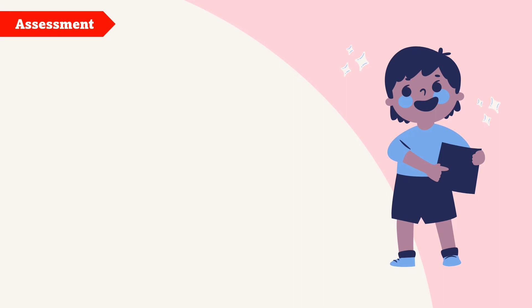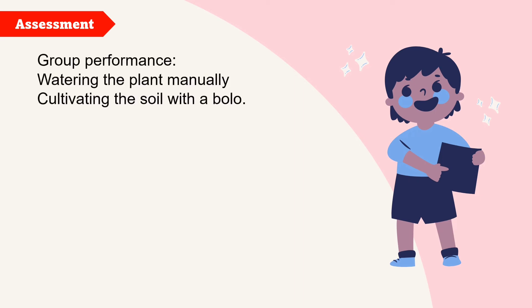At this point, we are going to put your knowledge into action. You are going to have a performance task: water the plants manually and cultivate the soil with a bolo. It depends on your teacher what materials you are going to use. Here is how we are going to rate you.